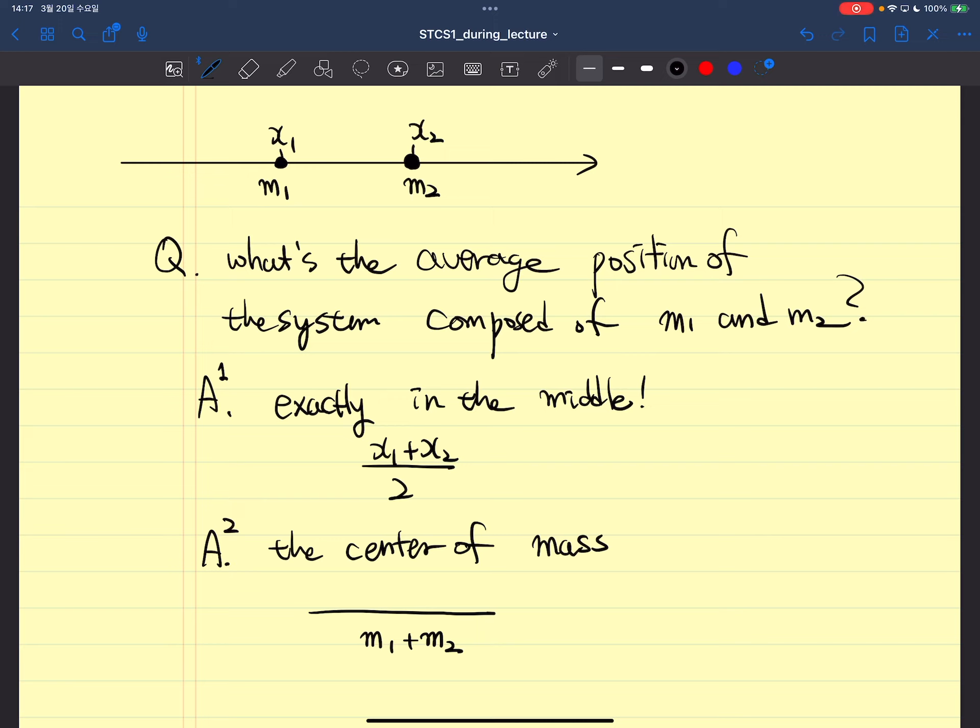We already know that the center of mass should be - the denominator is the sum of mass, and of course, M1·X1 + M2·X2. These two coefficients are some kind of fraction between 0 and 1. This is an example of what we call weighted average.